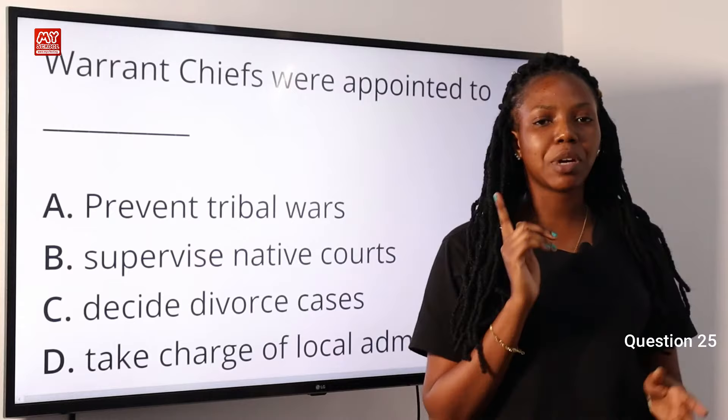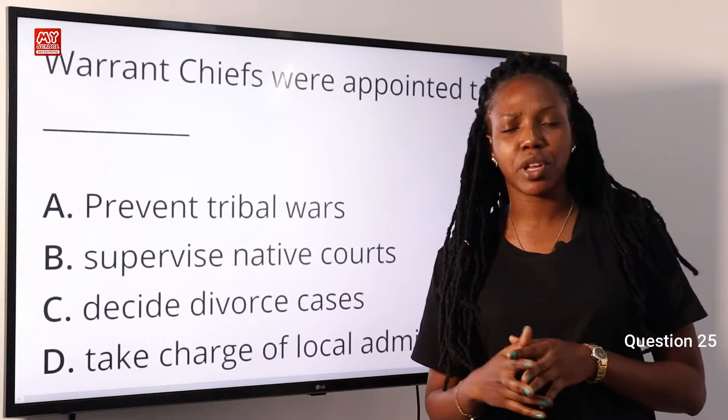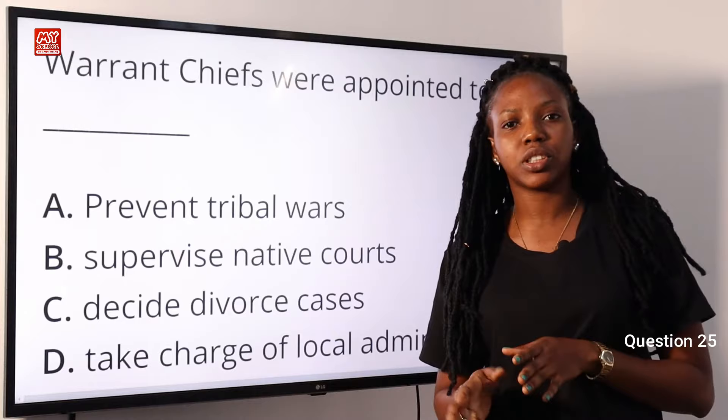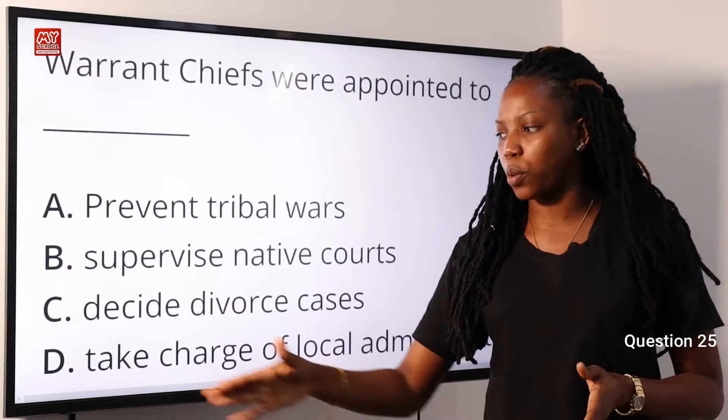In the eastern region, traditional rulers could not be easily identified because the system of government was highly decentralized — meaning power was placed in the hands of so many. Due to this, the colonial authorities decided to appoint chiefs and gave them certificates of recognition. These chiefs were called warrant chiefs, and they took charge of local administration. Option D is the correct answer.